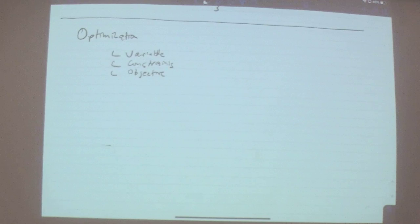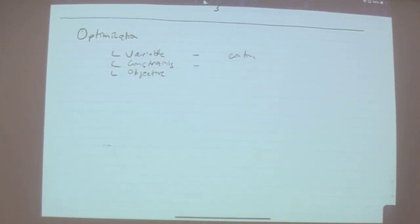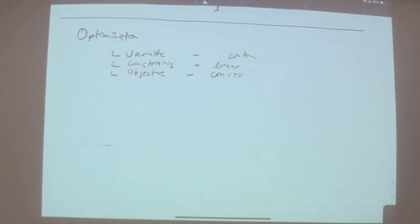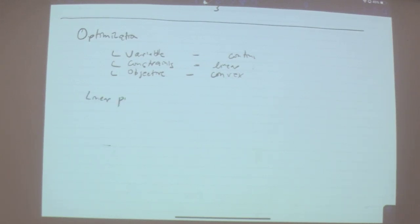The choices you make in how to frame a problem affect your ability to optimize. Under what conditions do you get something tractable? The variables need to be continuous — if they're not, you may have problems. A convex objective is good, and a linear objective is even better. Linear constraints are easiest to work with. The important special class of optimization problems we studied is linear programming — and integer linear programming.